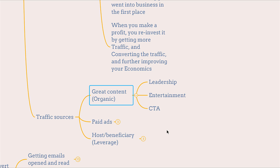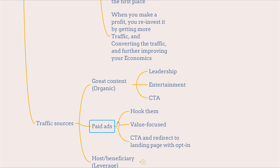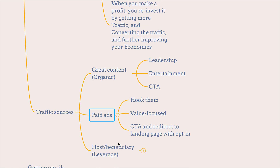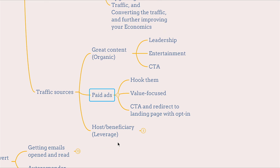Great content, which is going to be organic — make sure to use the following principles: leadership, entertainment, and call to actions when it comes to writing content for your organic reach. Paid advertisement is basically using great content but you are actually paying money to reach those who are not yet aware of you.